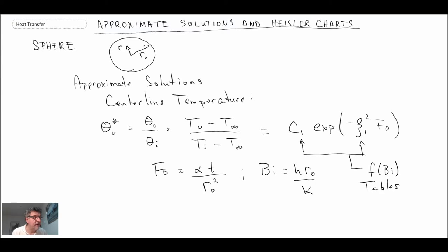So you would look those up. You compute your Biot number first and then you look them up. So that is our centerline temperature function spatial distribution.